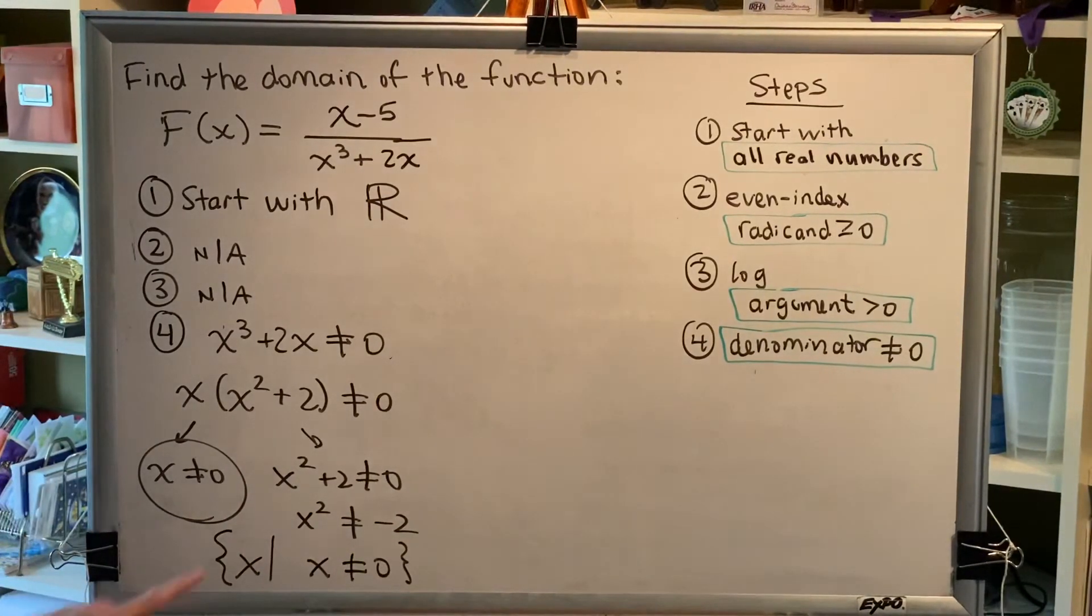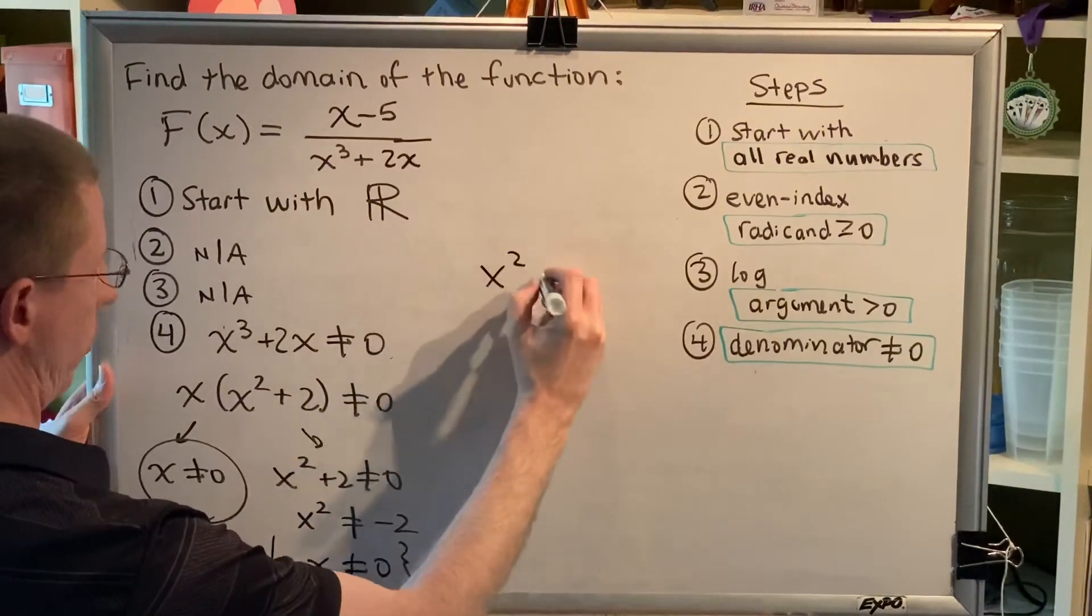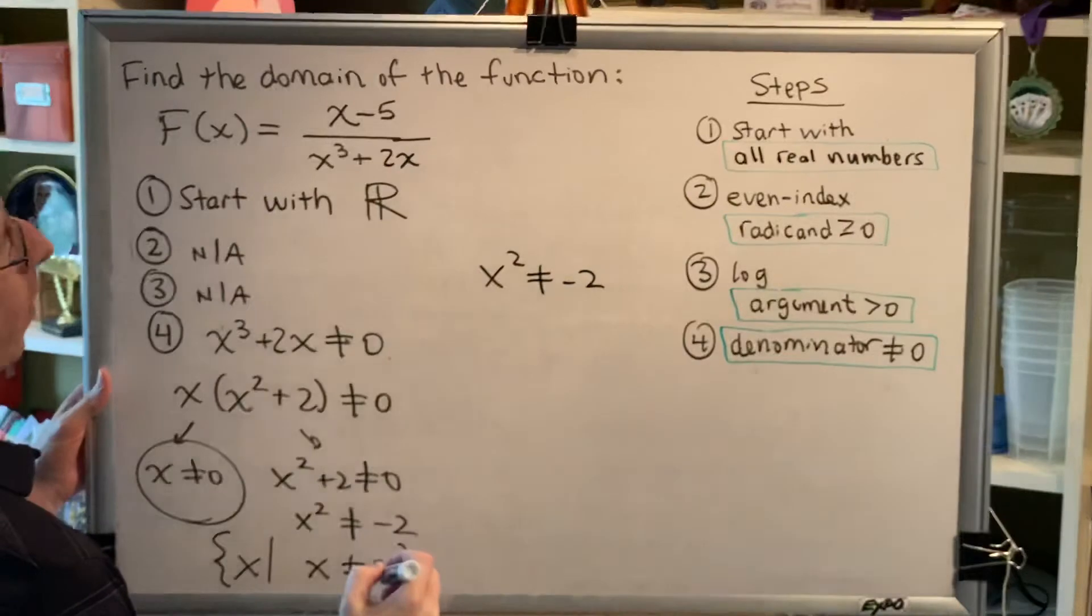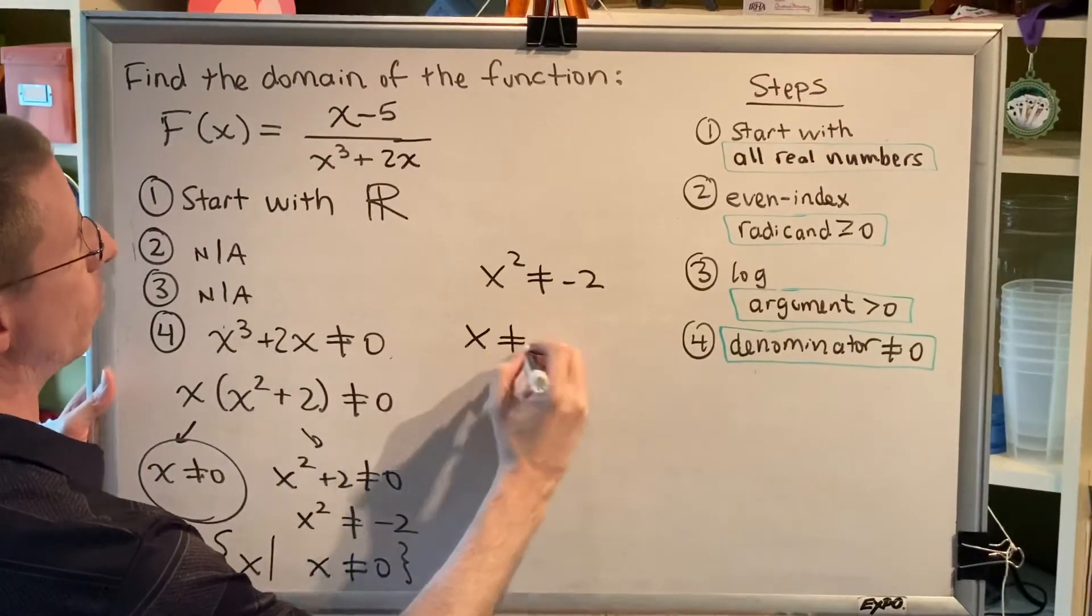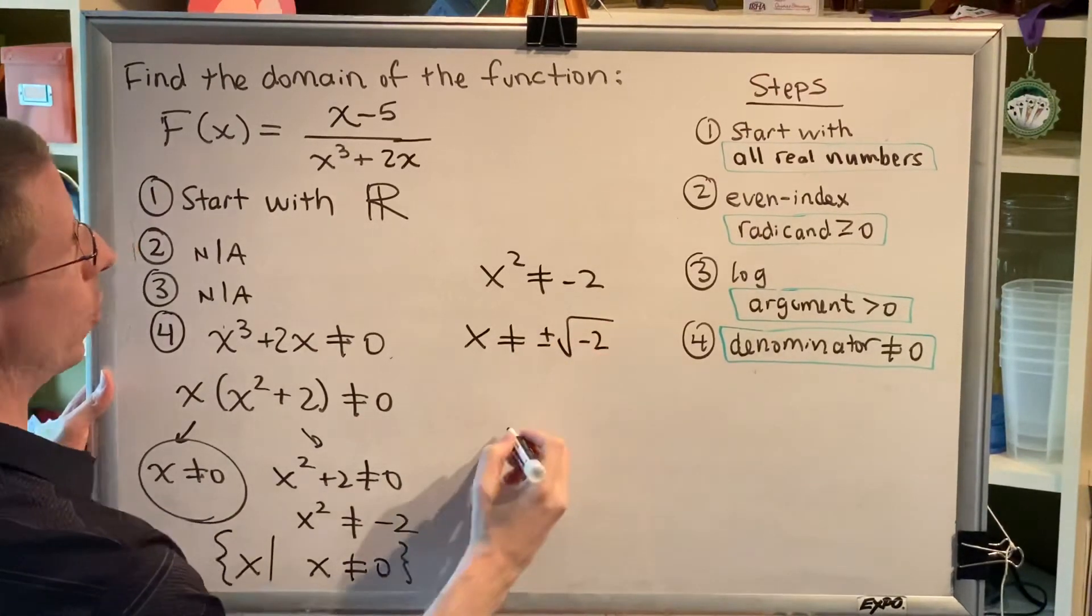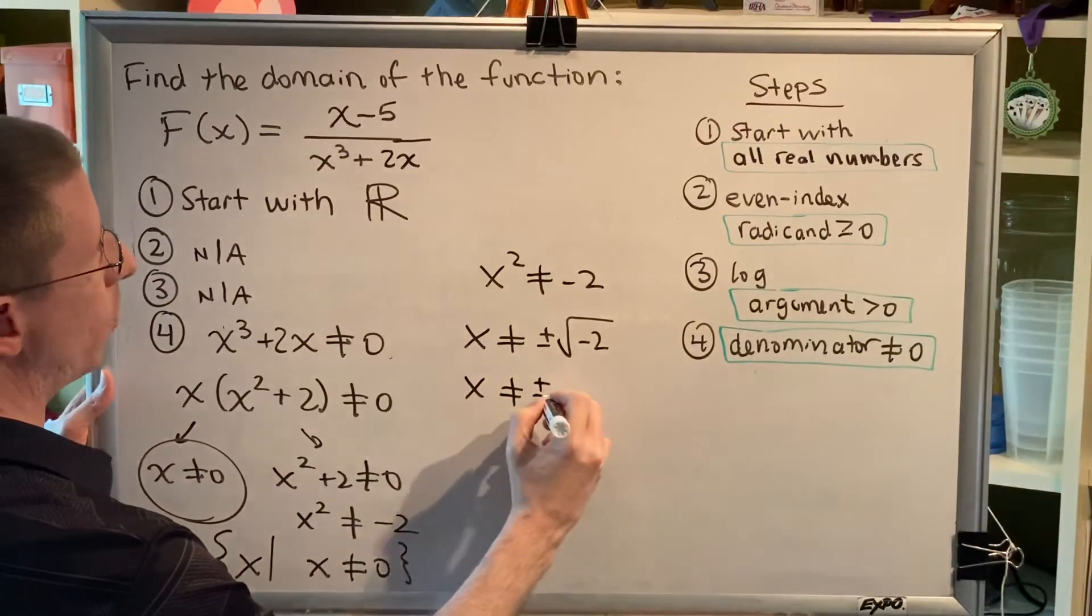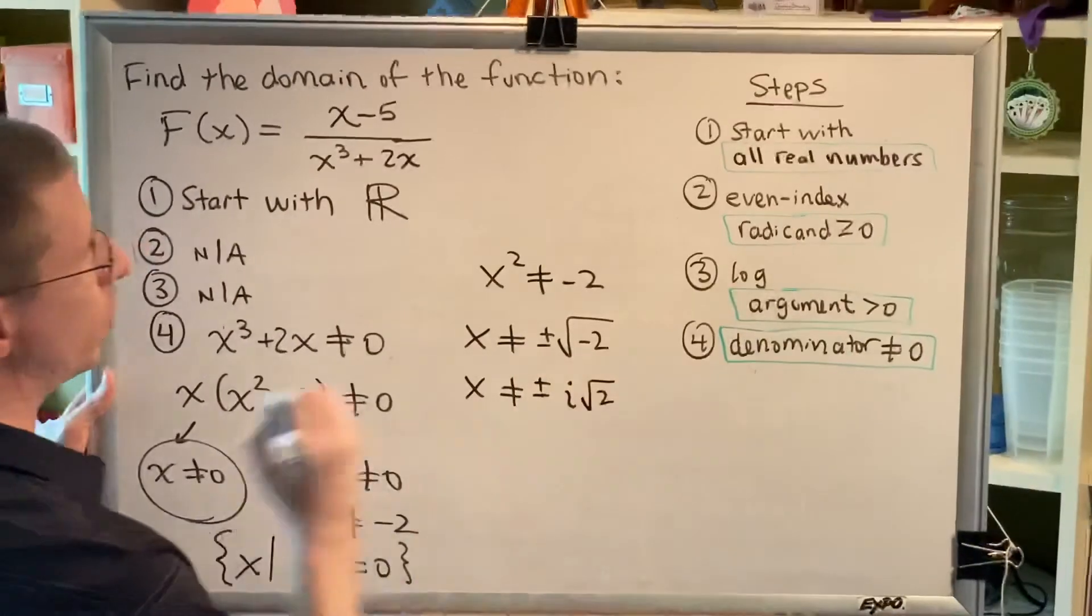Now, some students prefer to see an alternate explanation of this last piece of this problem. So let me go ahead and provide that for students who prefer to see it. If you were to use the square root property from intermediate algebra, you would get x is not equal to plus or minus the square root of negative 2, which becomes not equal to plus or minus i times the square root of 2.